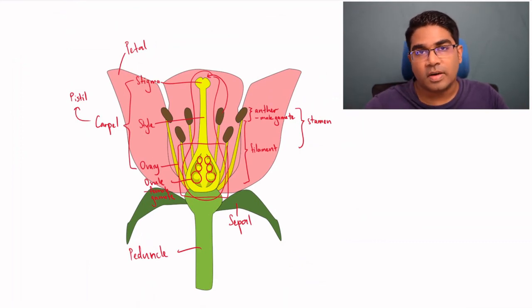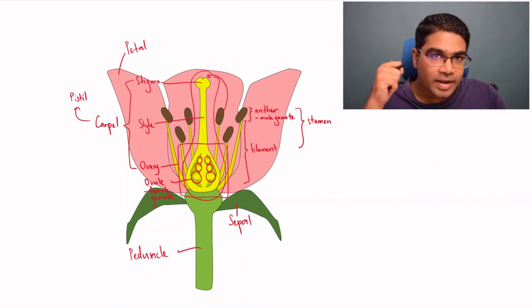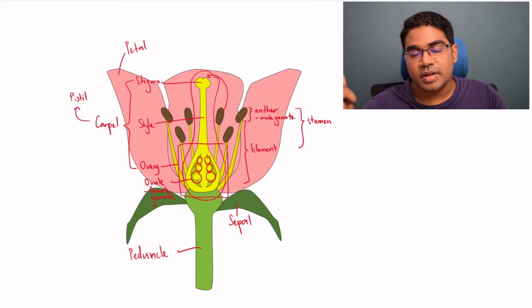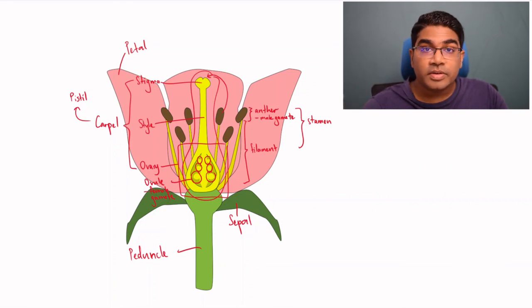And there we have it. These are all the flower parts that are involved in sexual reproduction. Again, guys, if you learned something from this, please do hit that like button. It really does help to support me and help to grow my channel. And if you're interested in videos like this, I'll be producing at least one a week. So do subscribe if you don't want to miss it. I'll see you in the next video.